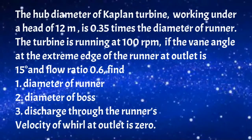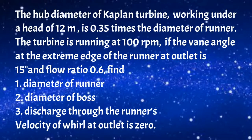Now let me read the given problem. The hub diameter of a Kaplan turbine working under a head of 12 meters is 0.35 times the diameter of the runner. The turbine is running at 100 rpm. The vane angle at the extreme edge of the runner at outlet is 15 degrees and the flow ratio is 0.6. Find the diameter of the runner, diameter of the boss, and discharge through the runner. The velocity of whirl at outlet is given as zero.